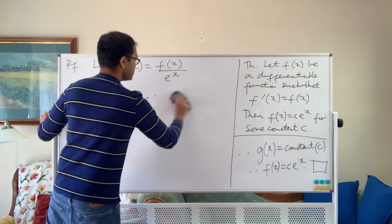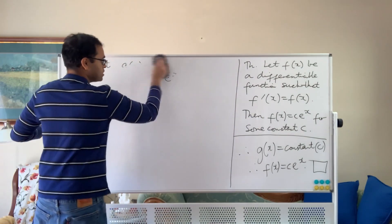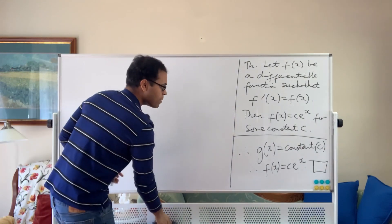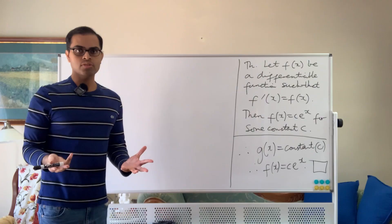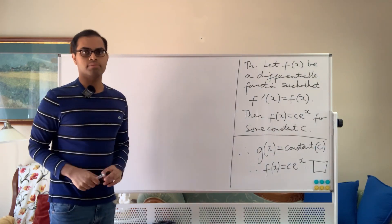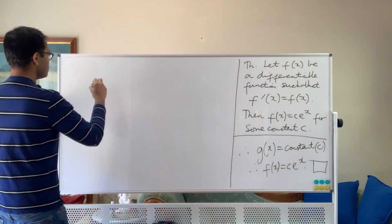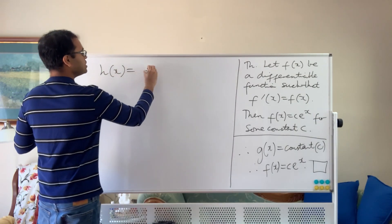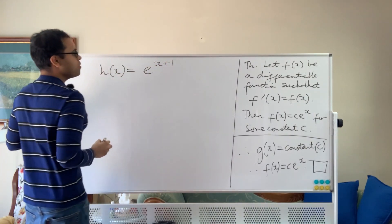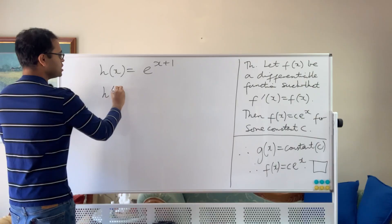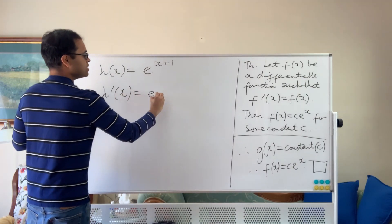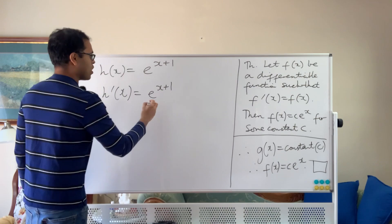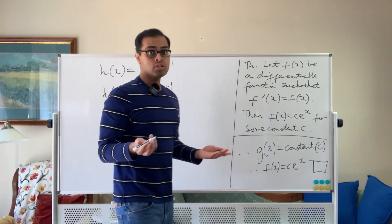So I presented this in a class when I was teaching a calculus class in Princeton, and a student asked me this question. What about this function? And isn't it equal to its own derivative, but not a constant times e to the x? So the function they gave me was the following: you could say, let's say h of x equals e to the x plus 1. If you try to differentiate using the chain rule, you get h prime of x is e to the x plus 1 times the derivative of x plus 1, which is just 1. So why is this not a counter example?